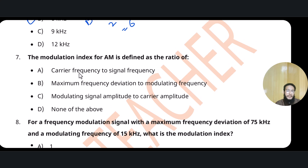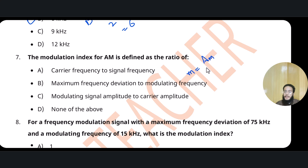Question 7: The modulation index for amplitude modulation is defined as the ratio of which quantities? The modulation index (m) is the amplitude of the modulating wave divided by the amplitude of the carrier. Option C will be the correct answer.